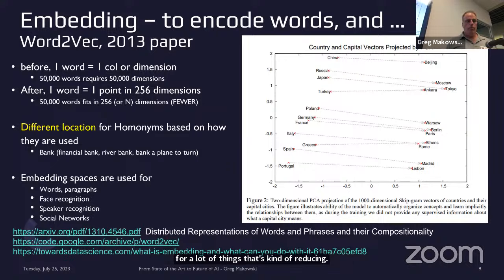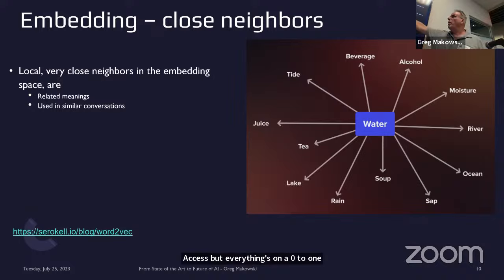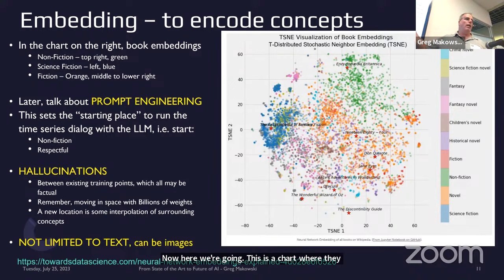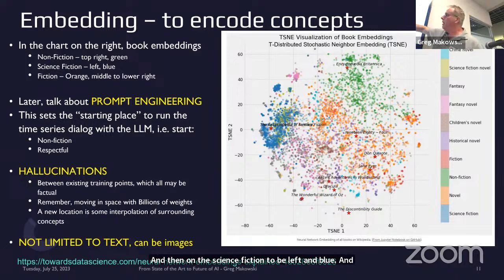Here's an example: with 256 dimensions on a zero-to-one scale, very small — 0.001 — we have 'water,' and near it you might have 'river,' 'moisture,' 'alcohol.' Related concepts in the same conversation cluster around similar words. There's also a chart where they were analyzing books by genre and mapping them down. By color coding, in the top right there's a lot of green — nonfiction books. Science fiction would be left and blue. Fiction would be in the orange area. You can find all these different categories — not just one word or one sentence, but a whole book.